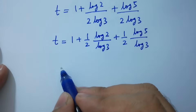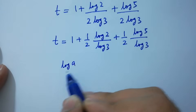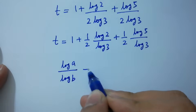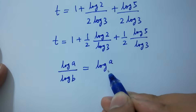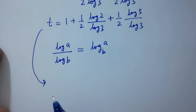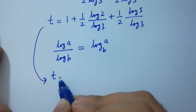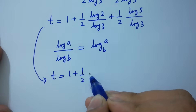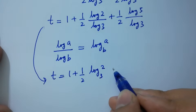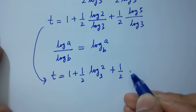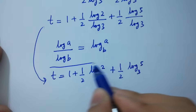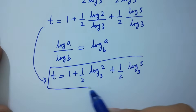As we know, log A over log B equals log A to the base B. Therefore t equals 1 plus one-half log 2 to the base 3 plus one-half log 5 to the base 3, which is the value of t.